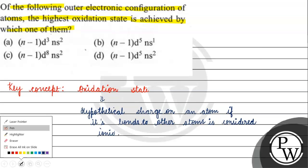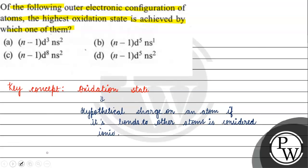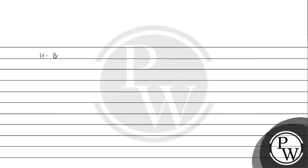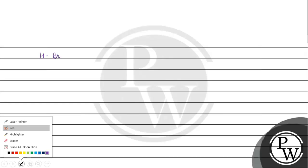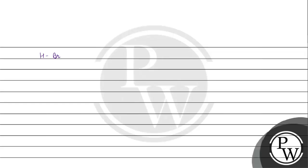Let's see an example. We can take HBr — it has a single bond. If this bond is considered ionic, what will be the charge on Br? The charge on Br will be minus 1, and hydrogen will be plus 1. So the oxidation state of Br is minus 1 and the oxidation state of hydrogen is plus 1.